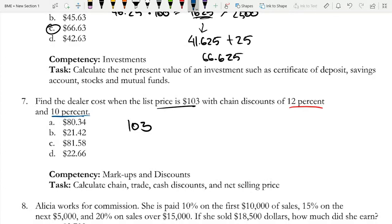So with chain discounts of 12%, if you're getting a 12% discount, it would retain 88% of the value. So that's times 0.88. And then you get another discount after this of 10%. So the retained value is 90%.